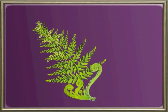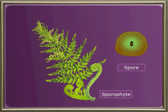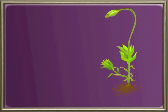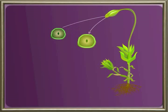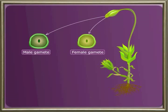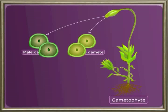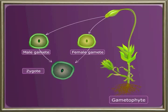The spore-producing plant is called a sporophyte. In some plants, the parent plant produces male and female gametes. Such a gamete-producing plant is called a gametophyte. These gametes fuse to produce a zygote.